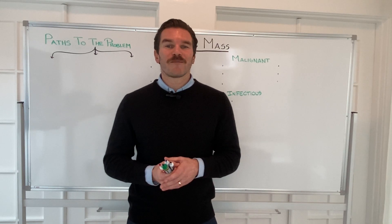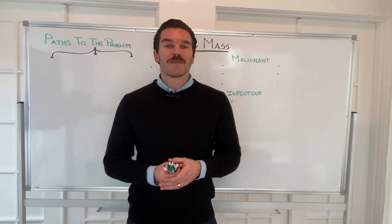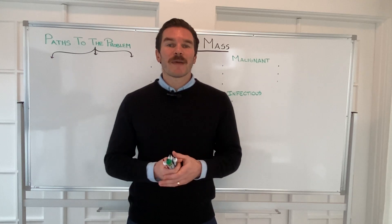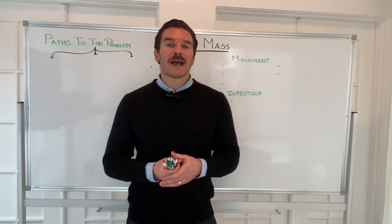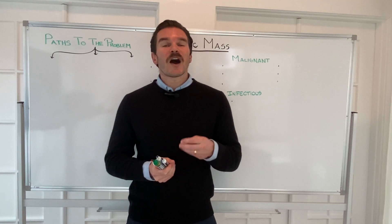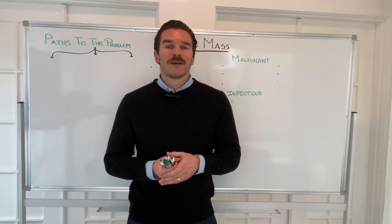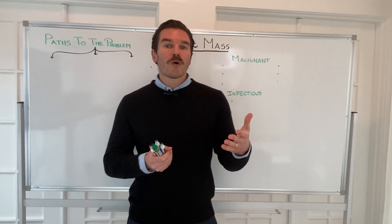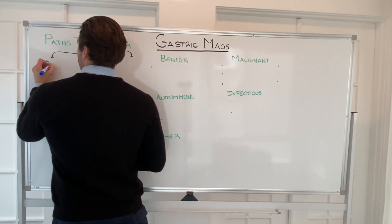Let's start with paths to the problem — the signs and symptoms that individuals may present with that could clue us into a gastric mass. To answer this, we need to ask what types of symptoms masses can cause. Masses involve an abnormal proliferation of tissue, and as that tissue develops, it can erode into or cause problems with nearby vessels. So one path to the problem involves occult GI bleeding.